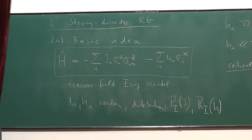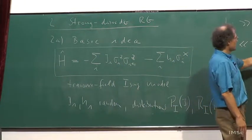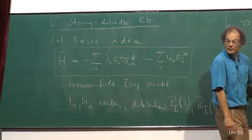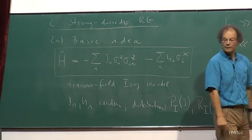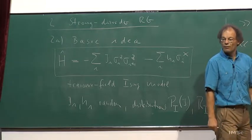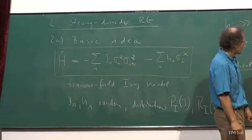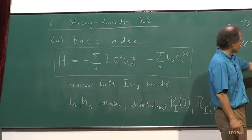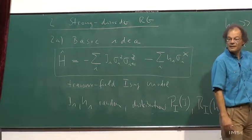Going from the exact result to the result about the averages is not a trivial step. One is an average over a distribution of J's and H's; the other is an exact result for a product. For an infinite chain, because the variables are independent, averaging over the distribution of J's is simply the same as adding up all values along a long chain.